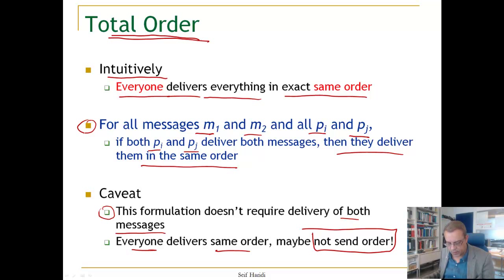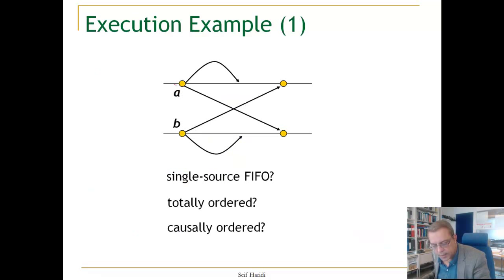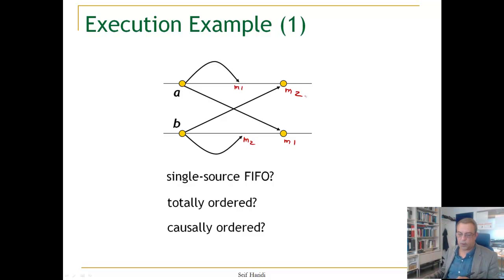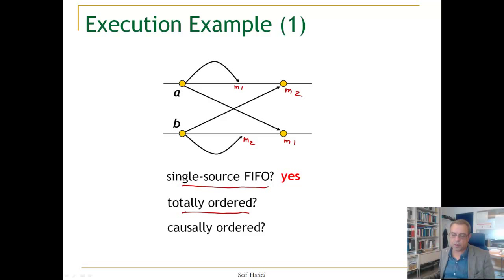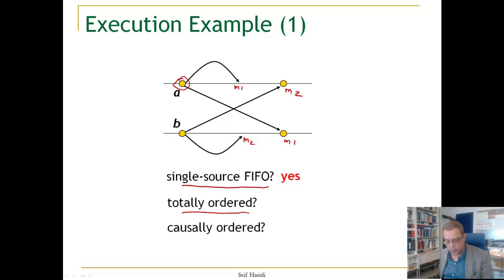Let's practice with these different orders. Here is an execution with delivery of M1 and M2. Is this single source FIFO? Since we have only a single message from each source, the answer is yes. Is it a total order delivery? Total order means all nodes deliver in the same order. But node A delivers M1 before M2, whereas node B delivers M2 before M1, so the answer is no. Is it causal order? We have seen this answer is yes.